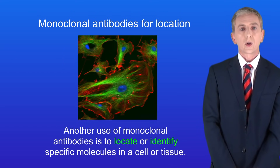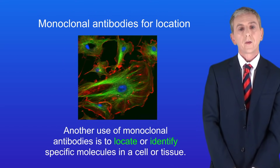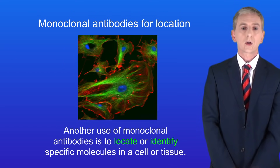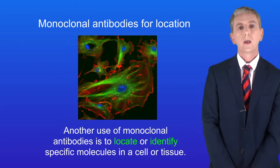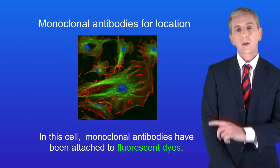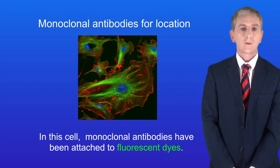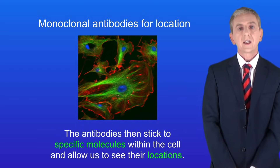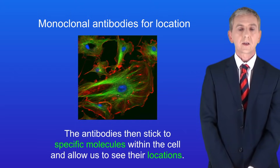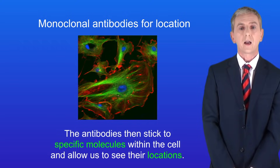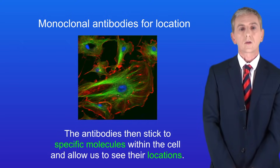Another use of monoclonal antibodies is to locate or identify specific molecules in a cell or tissue. For example, monoclonal antibodies can be attached to fluorescent dyes. The antibodies then stick to specific molecules within the cell and allow us to see their locations.